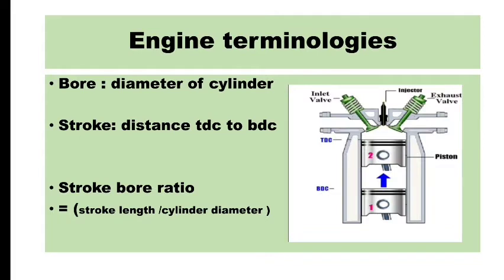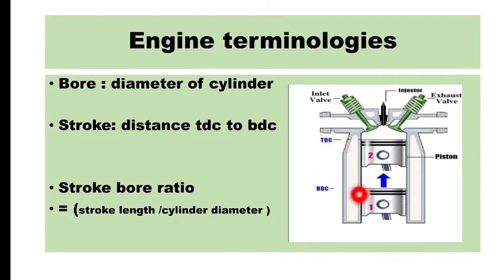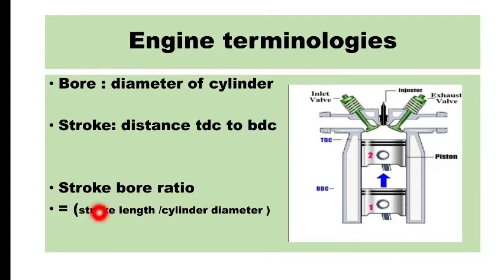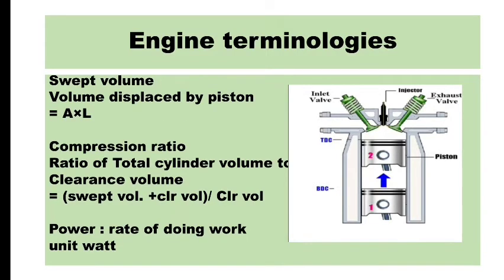Before starting with engine powers, some basic terminologies are important. First one is bore — the diameter of the cylinder is expressed as bore. Then stroke — it is the distance traveled by the piston, expressed in mm or centimeter. The distance from TDC to BDC is called stroke. Stroke-bore ratio is the ratio of stroke length to cylinder diameter.